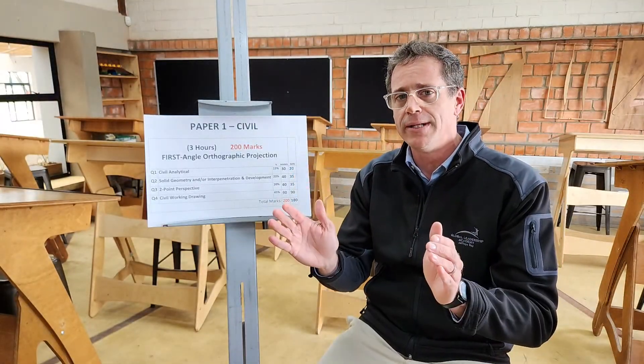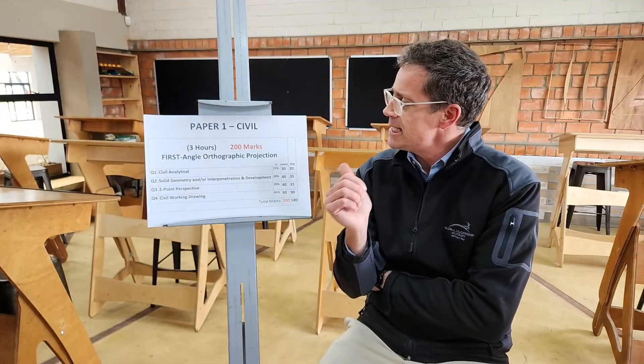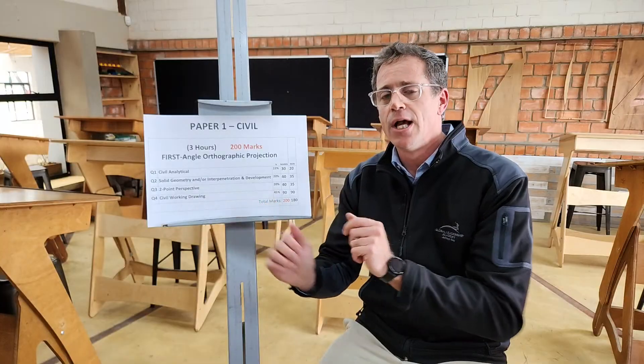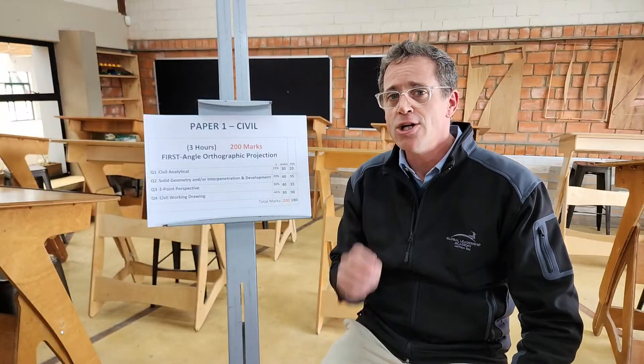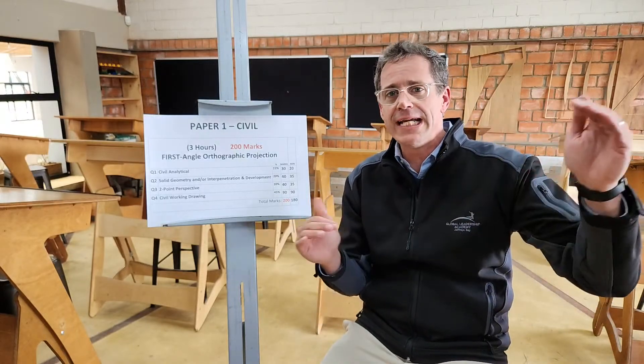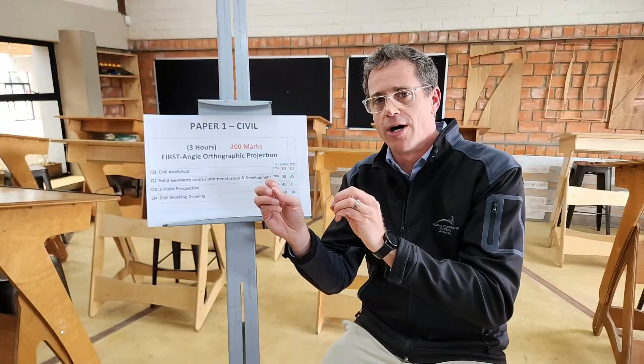Question 2 has a very interesting statement in the documentation — it says it's going to be a solid geometry question and/or interpenetration and development, for another 40 marks, about 20% of the paper. This means it can be either solid geometry or interpenetration and development, or both. My gut feel says it will likely be both, as it tests more learners across different abilities and gives you the opportunity to pick up marks on one if you struggle with the other. Please prepare for both.